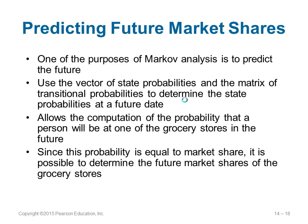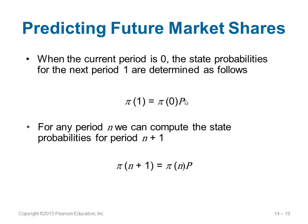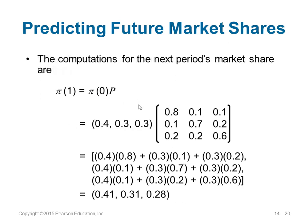Using Markov analysis we predict the future. We know the vector of state probabilities (current probabilities) and the matrix of transition probabilities; using these two we can identify the probability of being in a state in the next month or the month after. To predict the next period: phi of 1 equals phi of 0 times P. More generally, phi of n plus 1 equals phi of n times P, or phi of n equals phi of 0 times P to the power n.